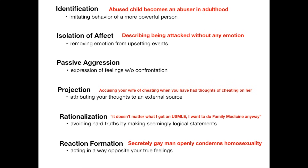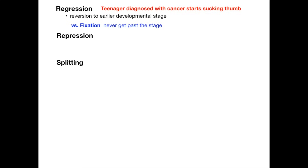Reaction formation is acting in a way opposite to your true feelings. A classic example is somebody who's secretly gay openly condemning homosexuality. Another example: the third grader who's really mean to the girl he has a crush on because he actually really likes her. Regression is reversion to an earlier developmental stage — like a teenager diagnosed with cancer who starts sucking their thumb or wetting the bed. The difference between regression and fixation: in fixation you get stuck at a developmental stage and never advance past it; in regression you pass that stage but then go back to it after something happens.